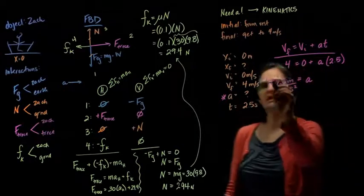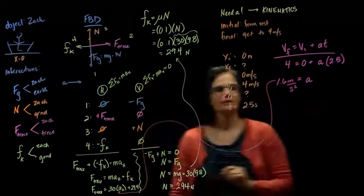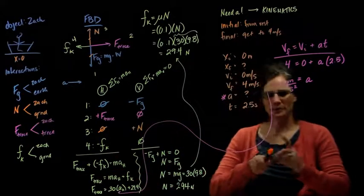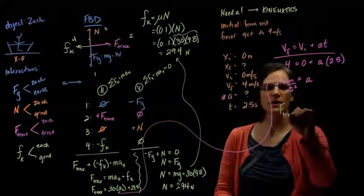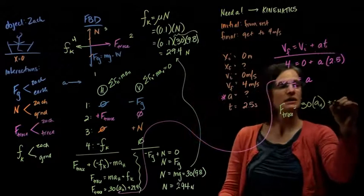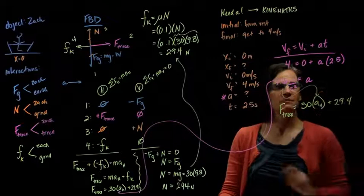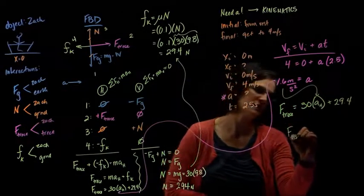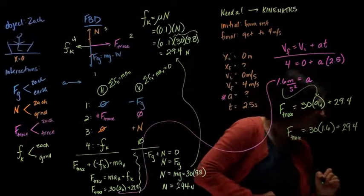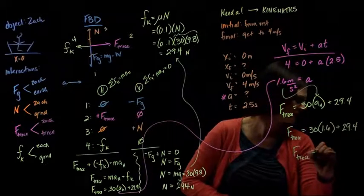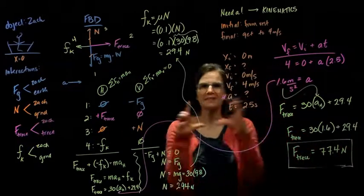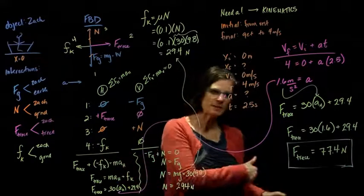That's my acceleration, and I can use it in my force relationship — it's the same acceleration caused by the forces. Rewriting the equation: the force Therese exerts equals 30 times the horizontal acceleration plus 29.4. Substituting: F_Therese equals 30 times 1.6 plus 29.4, which equals 77.4 newtons. That's how much she has to push in order to get Zachary to reach 4 meters per second in 2.5 seconds.